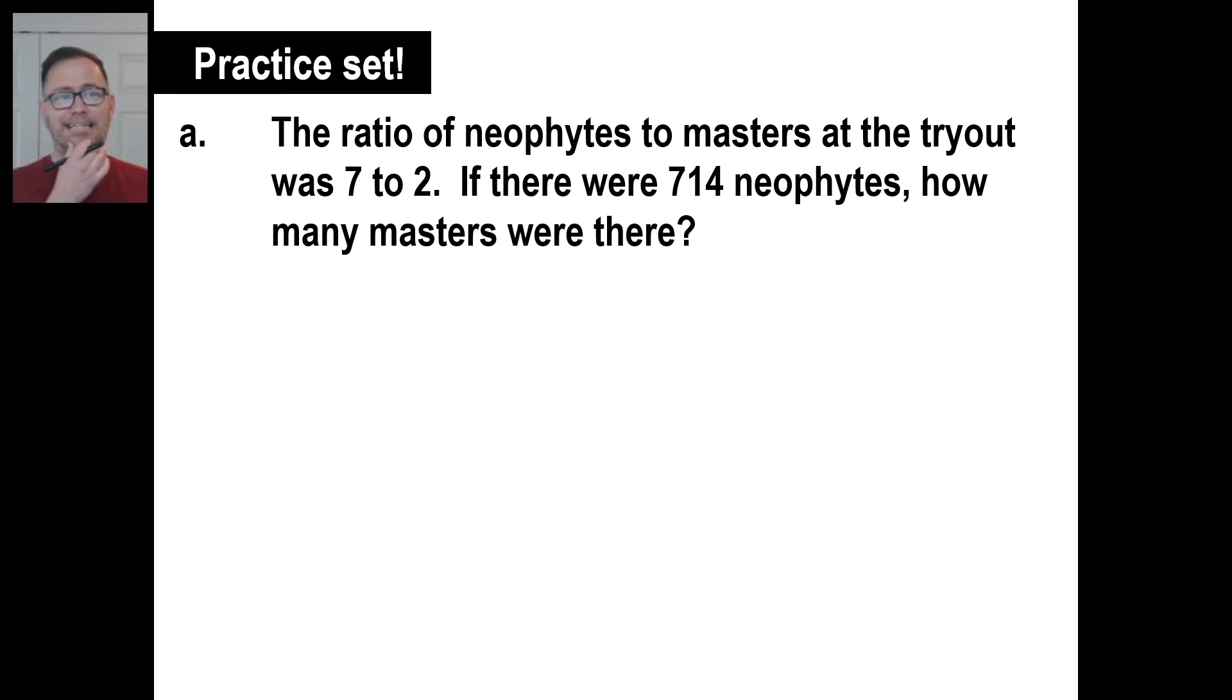All right, give A a try. And think about those crispy, crunchy onions in that cake as you do this. Pause it and try it. The ratio of neophytes to masters was 7 to 2. A neophyte is a newbie, they call it these days. So let's go newbie to the masters, and that ratio is 7 to 2.